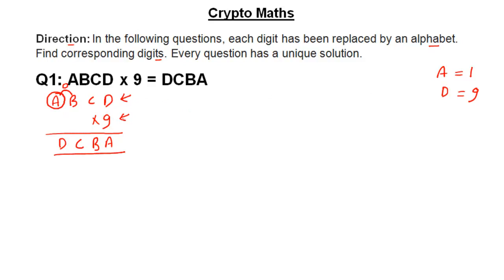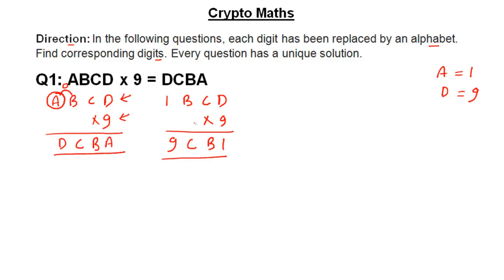So two alphabets have been revealed. Once you get any digit, just rewrite the question. So I am writing 1 B C D multiplied by 9, giving me 9 C B 1, since A equals 1. And D is 9, so I can replace D with 9 here as well.